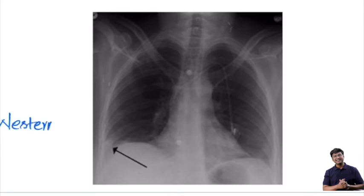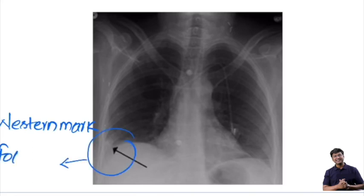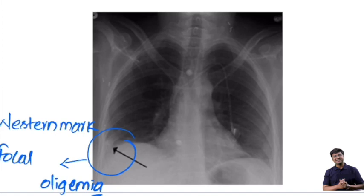The other important sign is the Westermark sign. Westermark sign is the presence of focal oligemia. These are the important signs in the chest X-ray in patients with pulmonary embolism. Thank you very much.